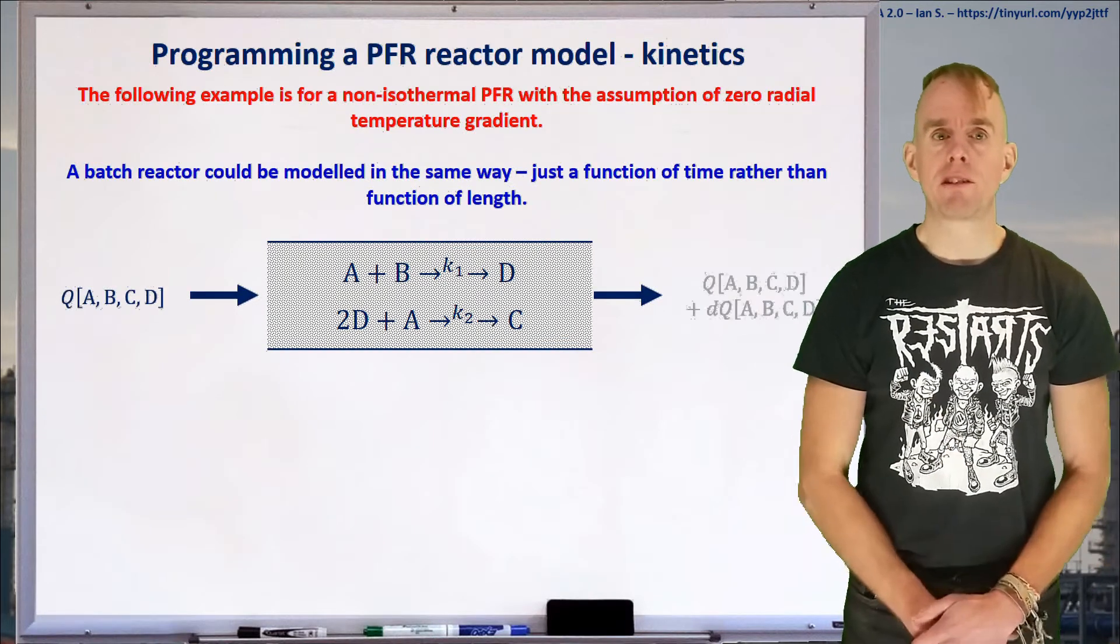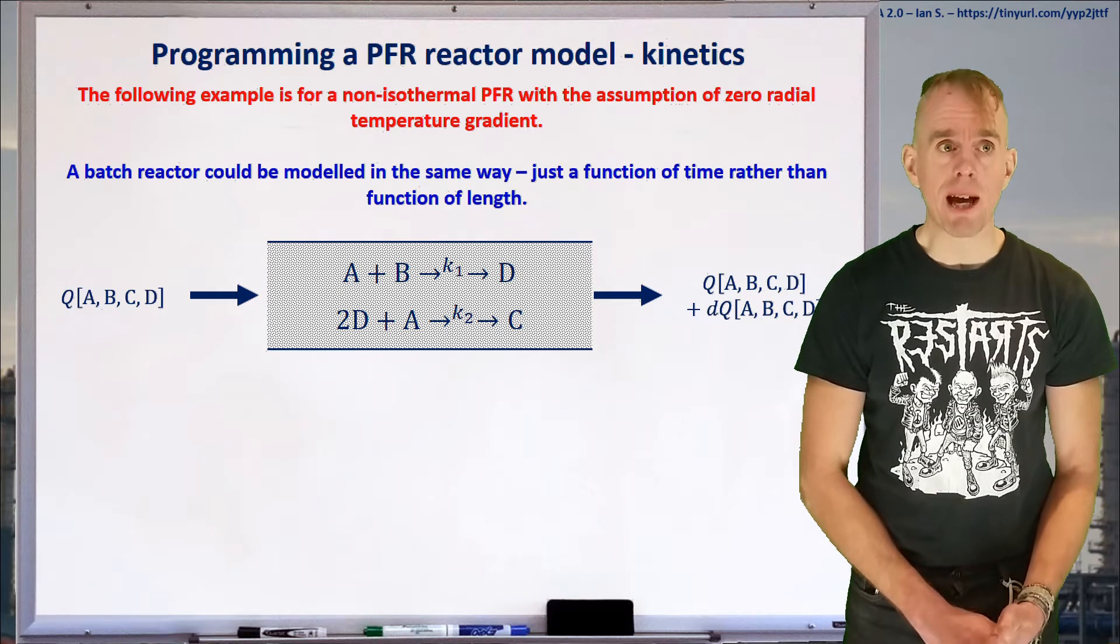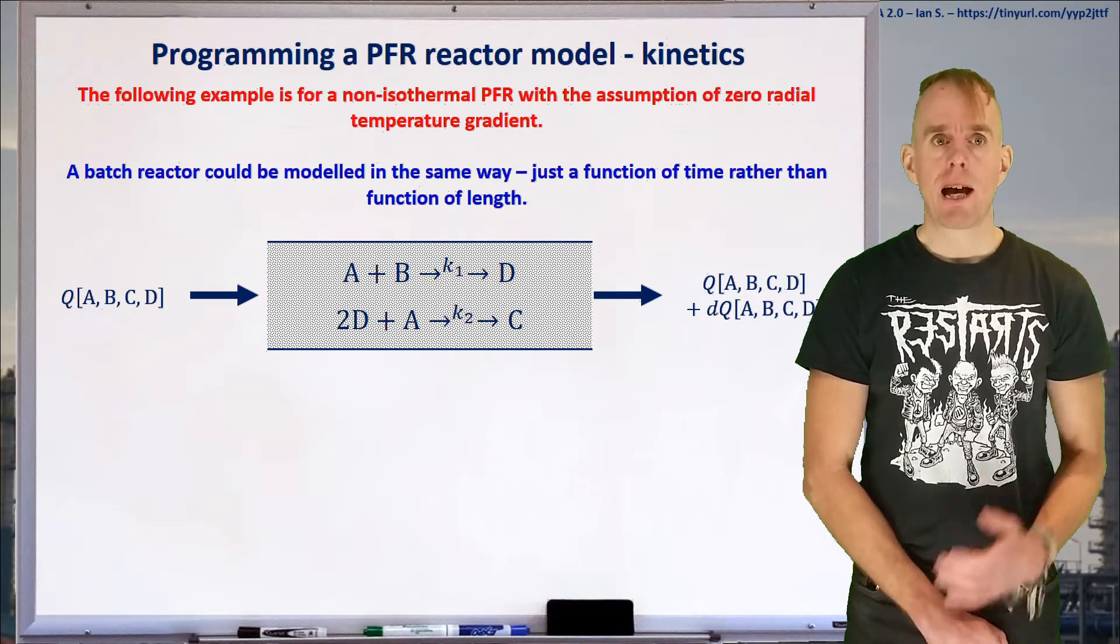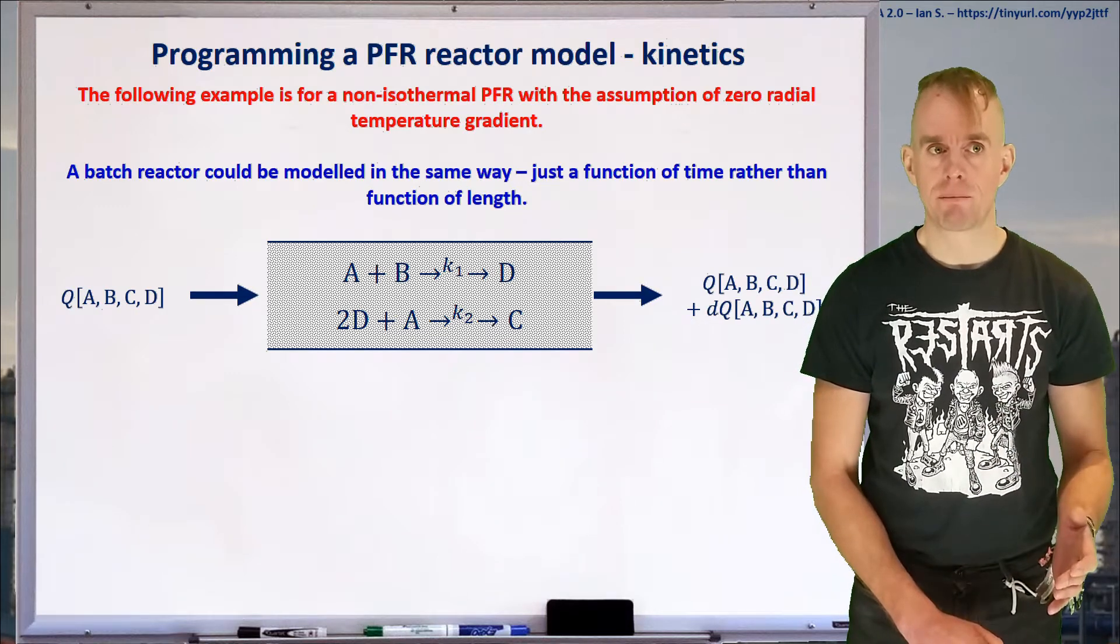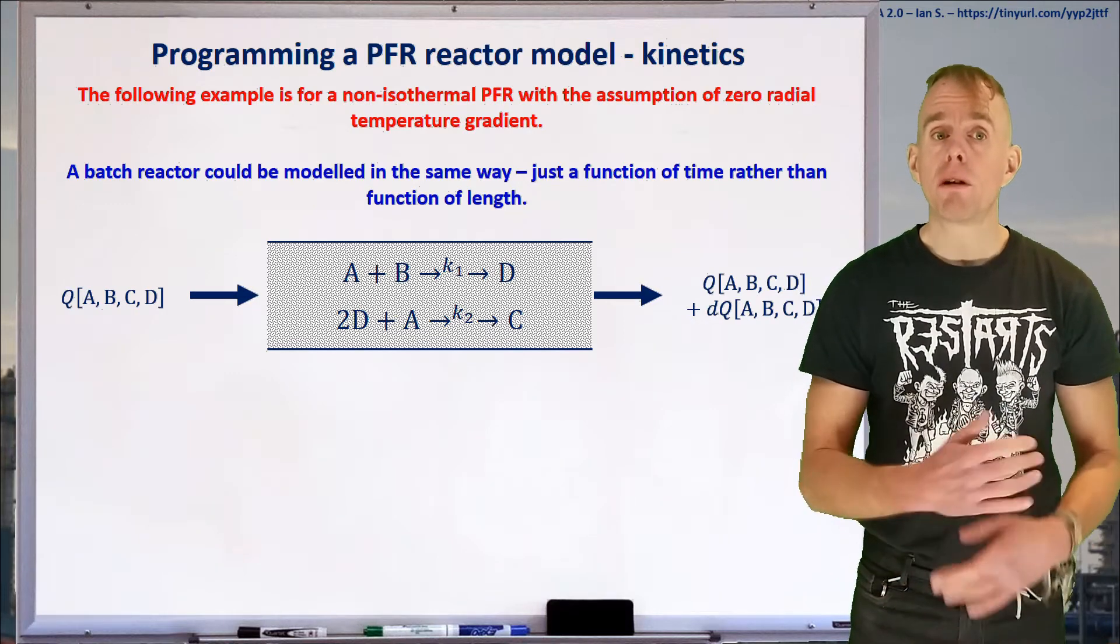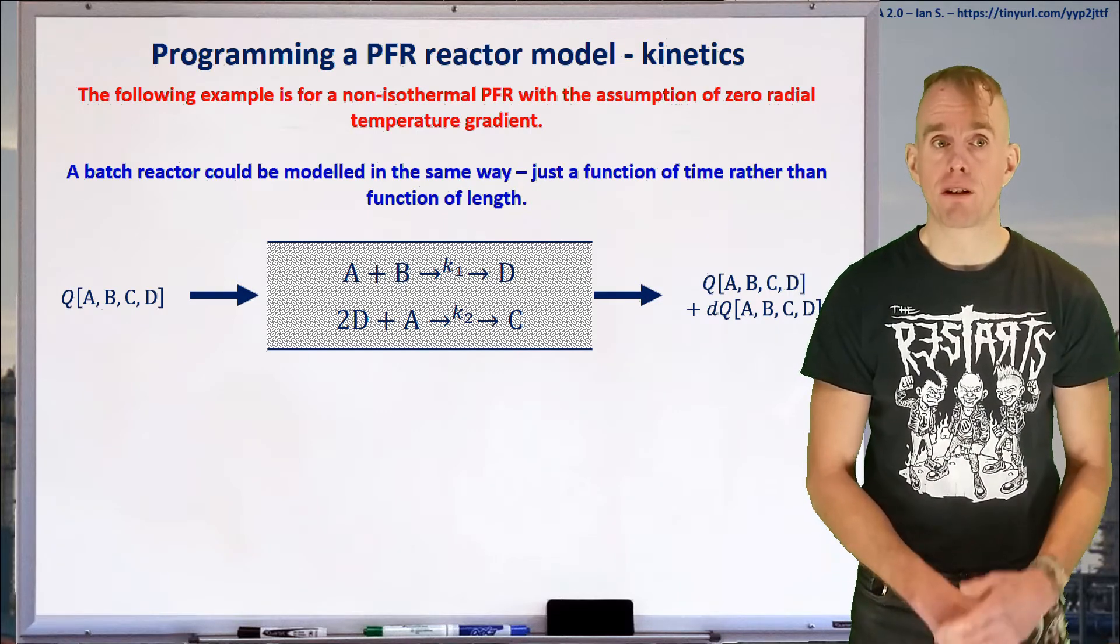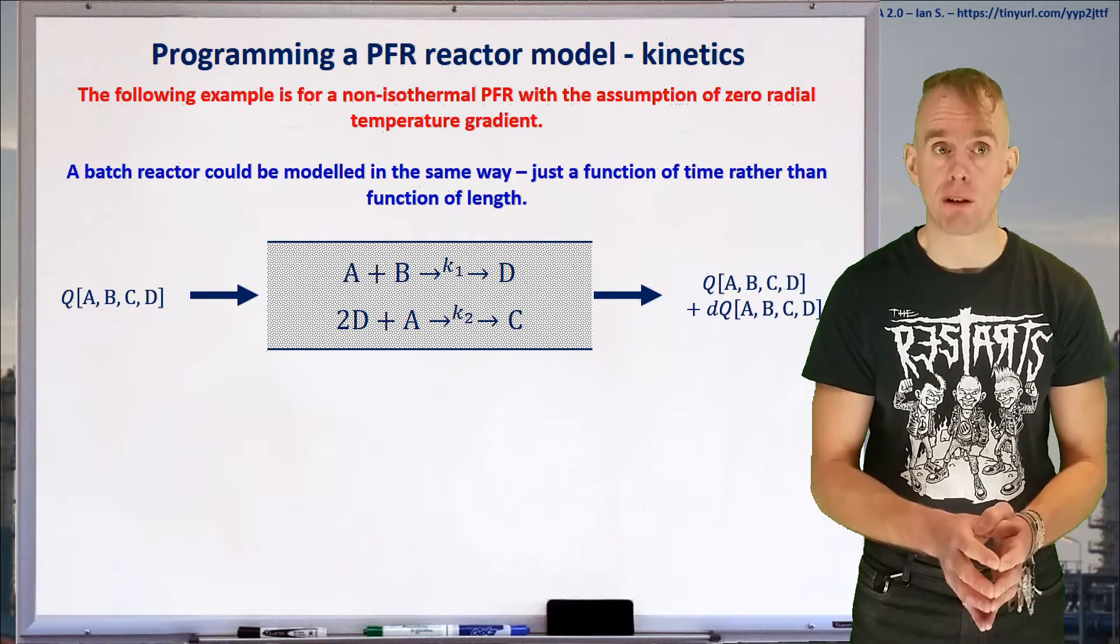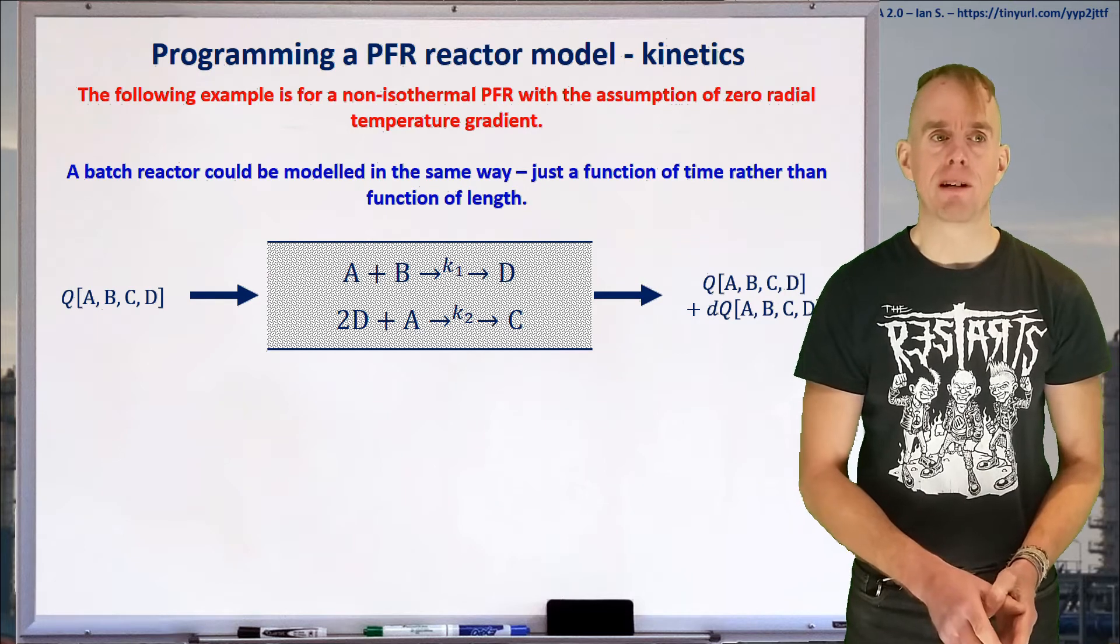Here on my whiteboard is a schematic diagram of a section through a tubular reactor. What we have is a non-isothermal tubular reactor, and we're going to assume zero radial temperature gradient. As a note, we could also use this approach to model a batch reactor—rather than a volume slice, we'd just be looking at a time slice at fixed volume.